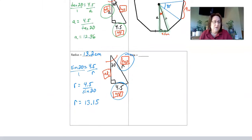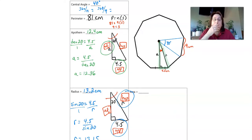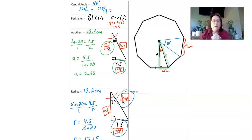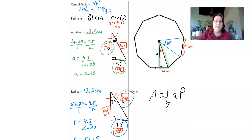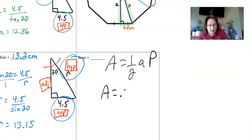So let's zoom out and see what we've done. We found the central angle, the radius, the apothem, and we were given the perimeter. Now we can find the area. The area formula is A = ½ × apothem × perimeter. We already have the apothem (12.4 cm) and the perimeter (81 cm), so: Area = 0.5 × 12.4 × 81.